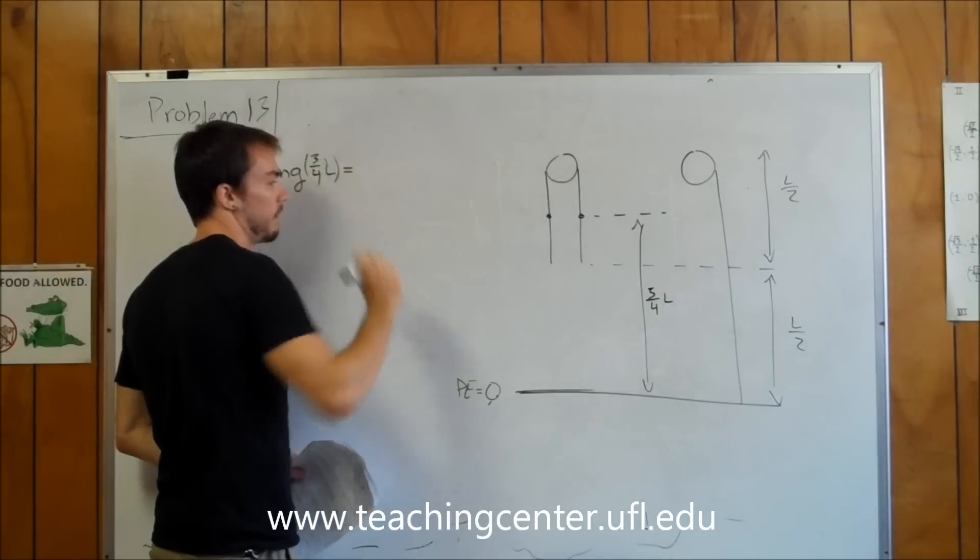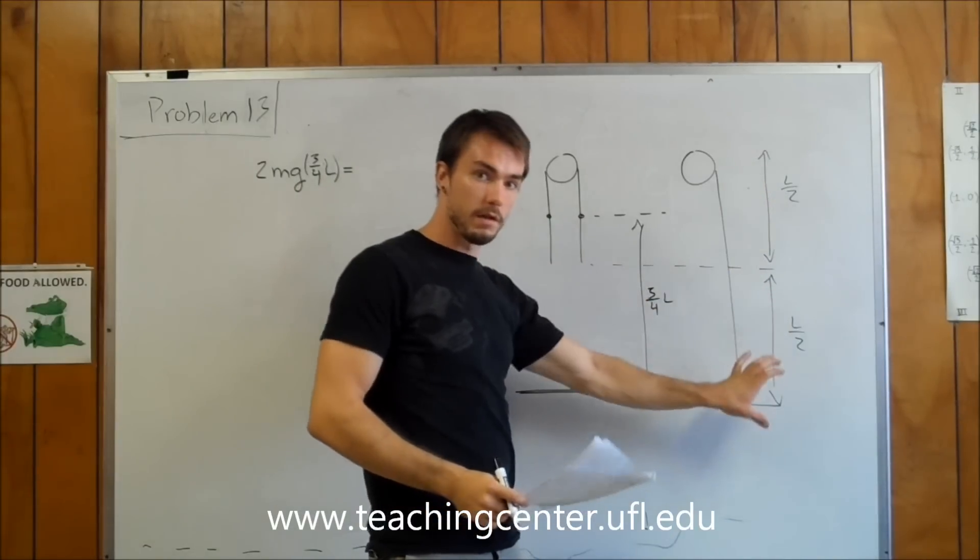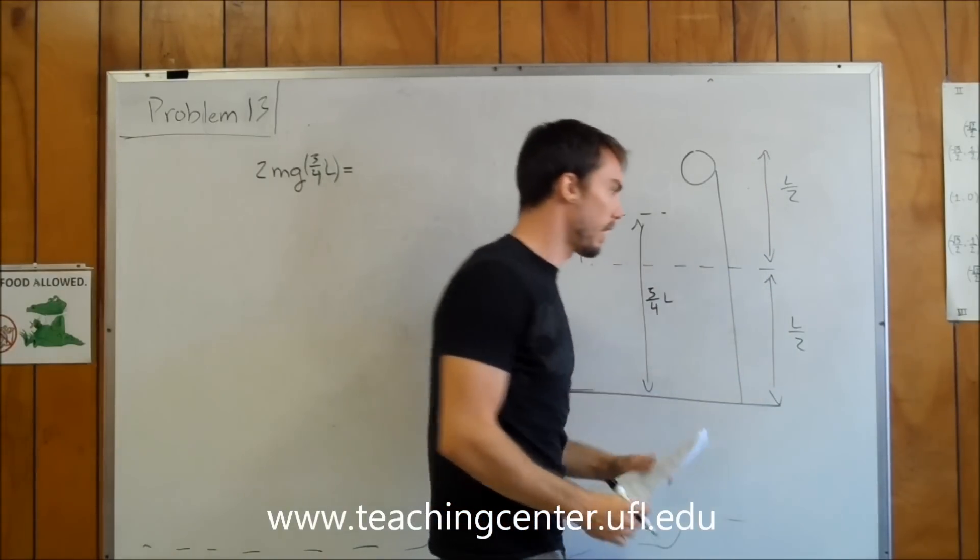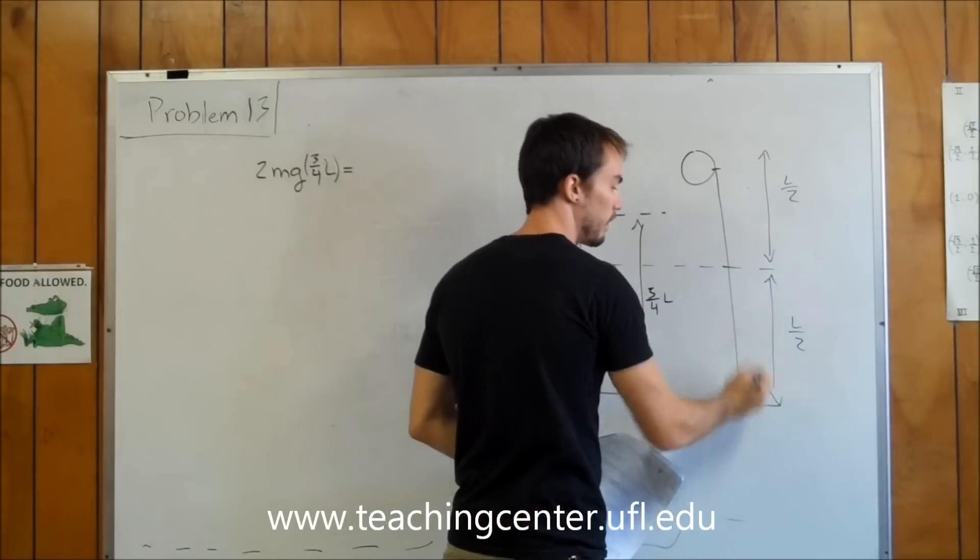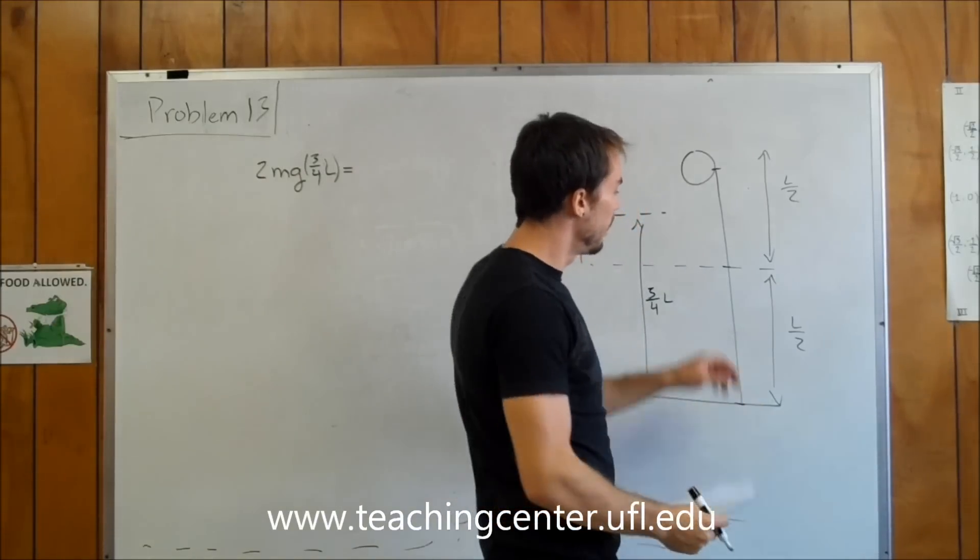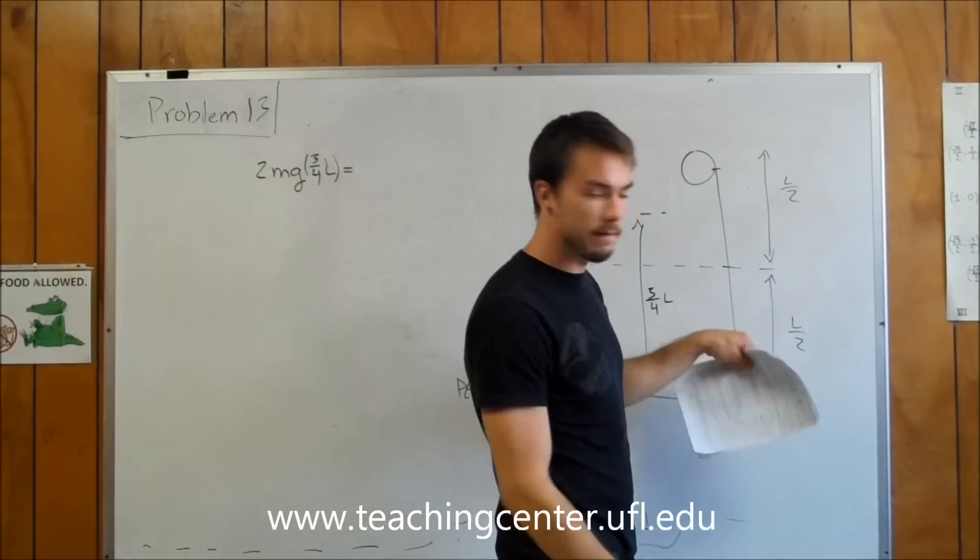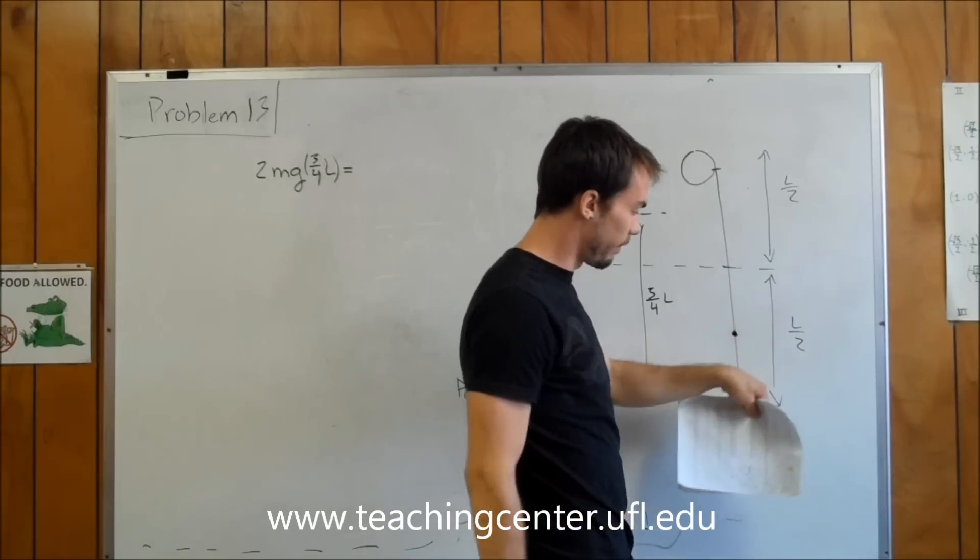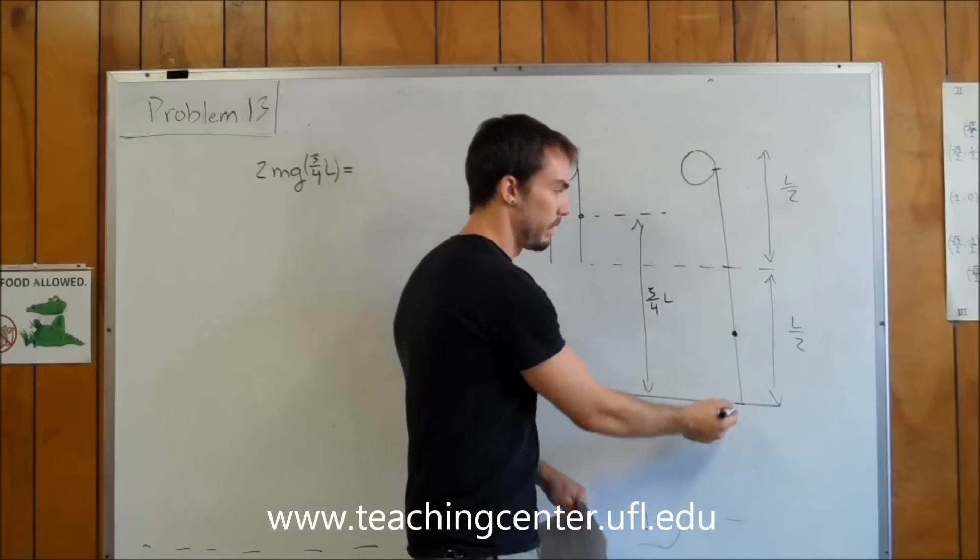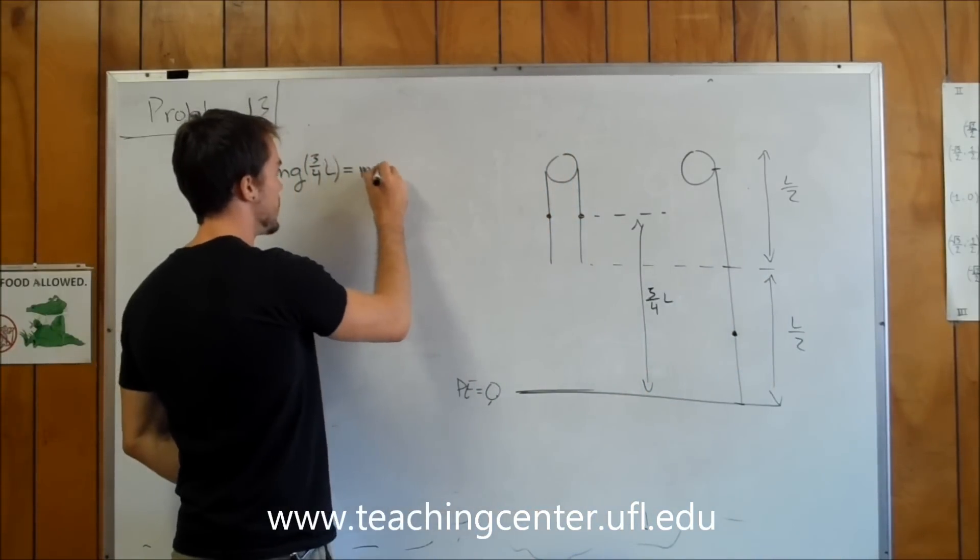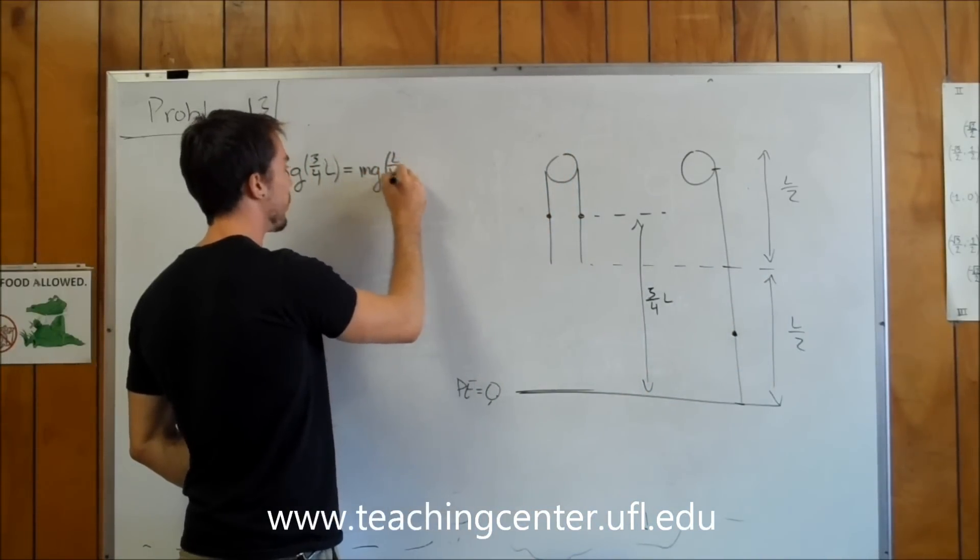Now that is going to be equal to the sum of the potential and kinetic energies. This one is just a little bit more complicated. Remember we still have our two chunks of rope. So this guy's center of mass is right here, so he's going to have a center of mass at L over 4, halfway from 0 to L over 2. So mg times L over 4.